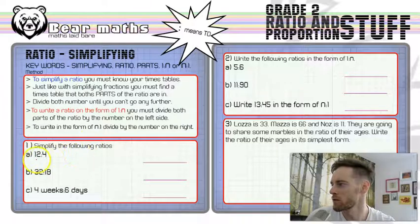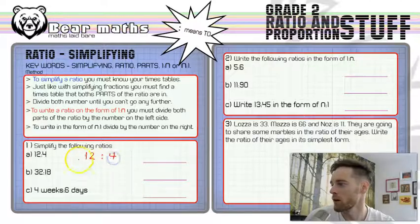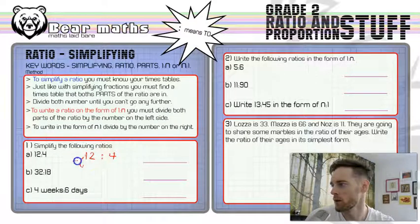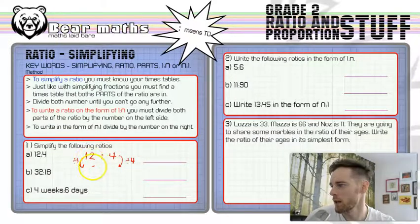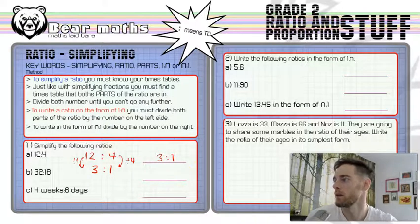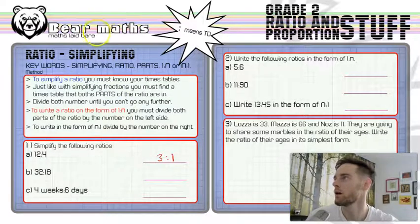The first question: simplify the ratio 12 to 4. I'll write that out as 12 dot-dot 4. What times table are both of those in? They're both in the 4 times table — that's the biggest number that fits into both. So I'm going to divide by 4: 12 divided by 4 is 3, and 4 divided by 4 is 1. So the simplified ratio is 3 to 1. We've made the numbers smaller, which is useful when working with contextual questions.